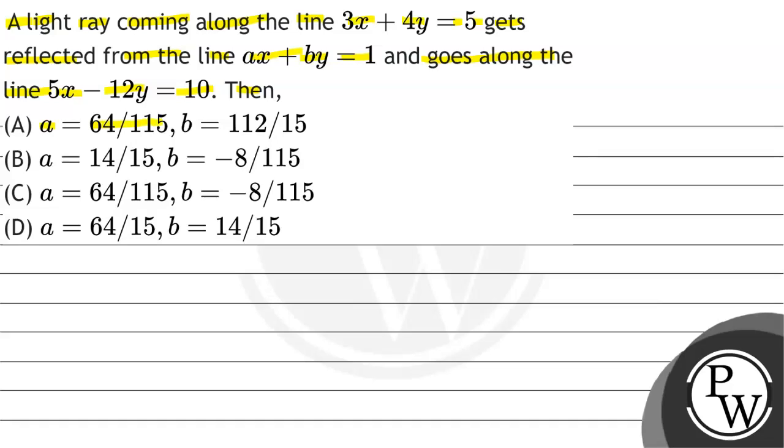Then option a: a equal 64 by 115, b equal 112 by 15. Option b: a equal 14 by 15, b equal minus 8 by 115. Option c: a equal 64 by 115, b equal minus 8 by 115. Option d: a equal 64 by 15 and b equal 14 by 15.